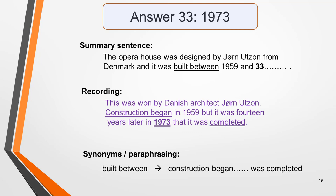Answer 33 is 1973 and this is the summary sentence. The Opera House was designed by Jørn Utzon from Denmark and it was built between 1959 and... and the recording: This was won by Danish architect Jørn Utzon. Construction began in 1959 but it was 14 years later in 1973 that it was completed. And this paraphrasing has been used. For built between we have construction began and was completed.